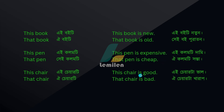This chair is — 'A chair T' — good — 'bhalo.' This chair is good: 'A chair T bhalo.' That chair is — 'OI chair T' — bad — 'kharap' or 'truti purno, truti jukto.' That chair is bad: 'OI chair T kharap.'